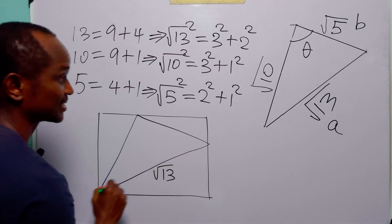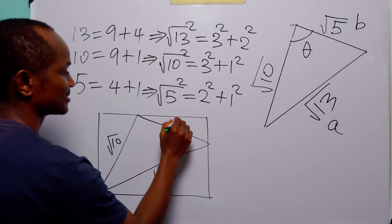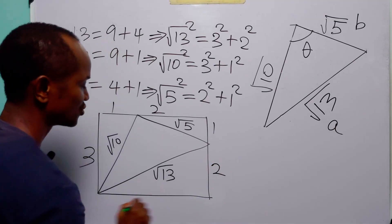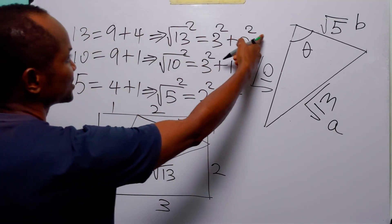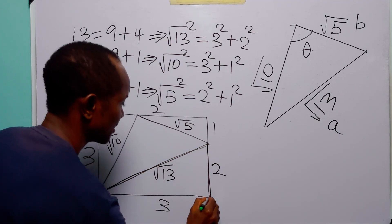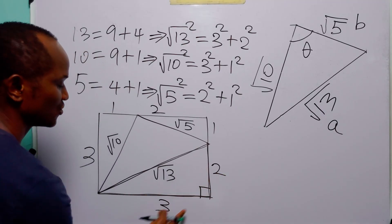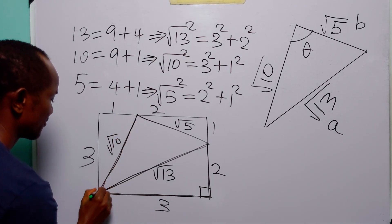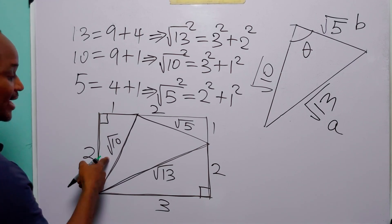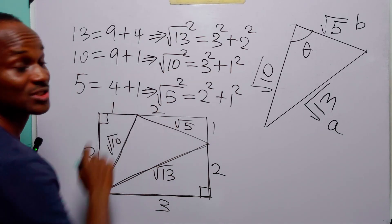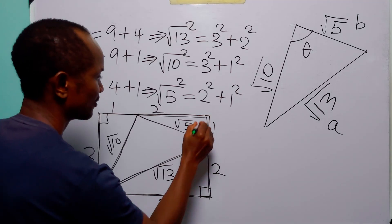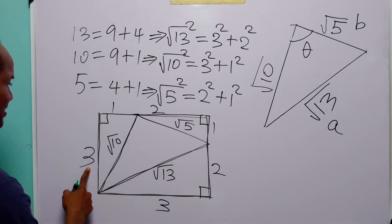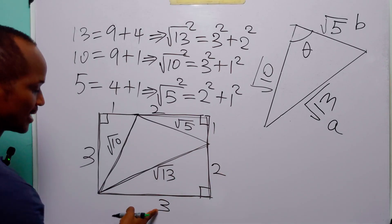The triangle with sides √13, √10, and √5 fits inside a square. √13 is the hypotenuse of a right triangle with legs 3 and 2. √10 is the hypotenuse with legs 3 and 1. √5 is the hypotenuse with legs 1 and 2. Since 1 + 2 = 3, this forms a 3×3 square, and the triangle we want is the shaded portion inside it.